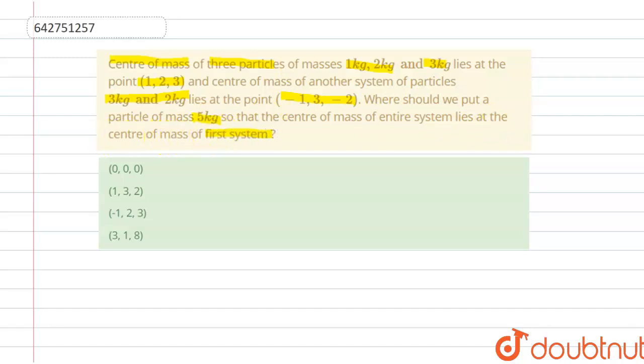So in this question, we have to find where should we put a particle of mass 5 kg, so that the center of mass of the entire system lies at the center of mass of the first system.